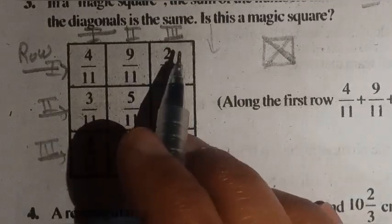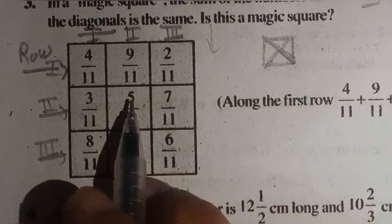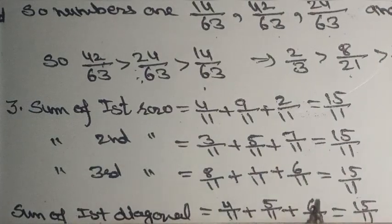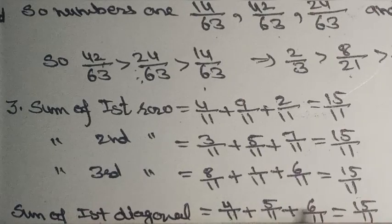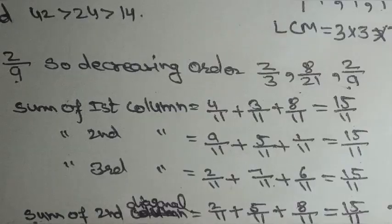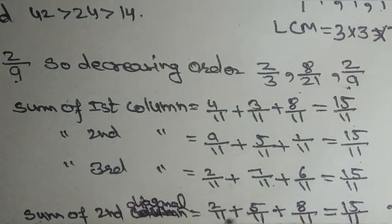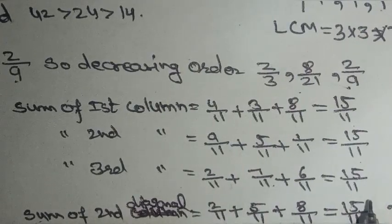Now the diagonals. First diagonal: 4/11 + 5/11 + 6/11. Like fractions, so 4 + 5 + 6 = 15, giving 15/11. Second diagonal: 2/11 + 5/11 + 8/11 = 15/11. Since all rows, columns, and diagonals sum to 15/11, this is a magic square.